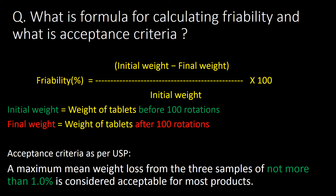What is the formula for calculating friability and what is the acceptance criteria? Percent friability is calculated with the formula: (initial weight minus final weight) divided by initial weight, multiplied by 100. Initial weight refers to weight of tablets before 100 rotations and final weight refers to weight after 100 rotations. Acceptance criteria as per USP: a maximum mean weight loss from three samples of not more than 1% is considered acceptable for most products.